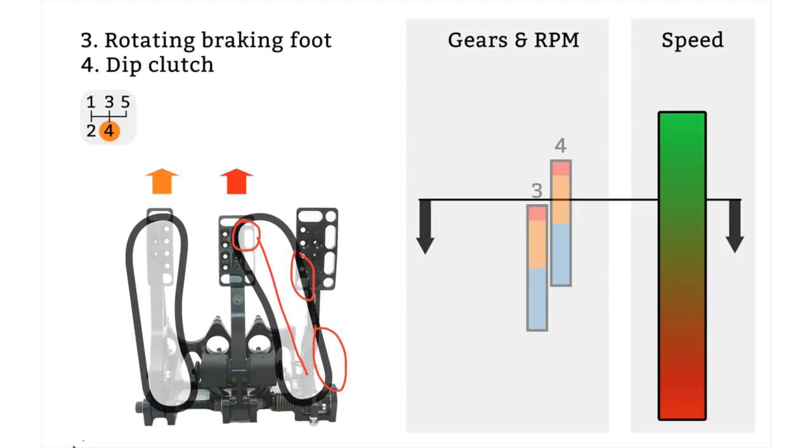Our left foot here is just about to get on the clutch and just before we blip the accelerator we're going to depress the clutch. On the right hand side here you can still see that we're in fourth gear and the RPM is still coming down as well as the speed.